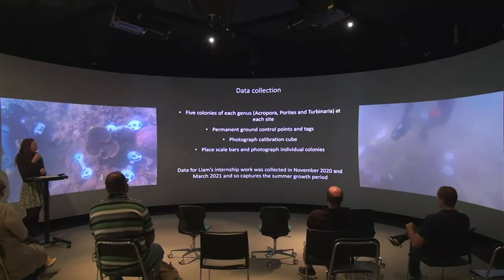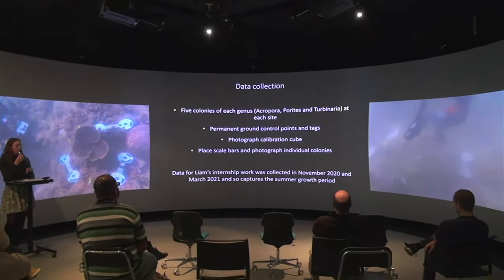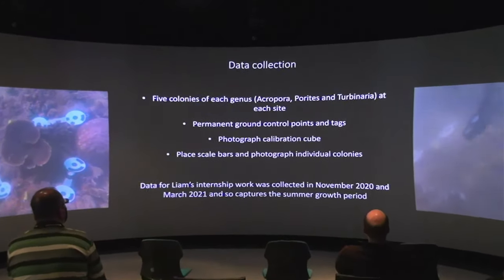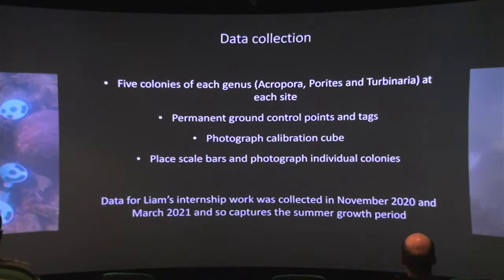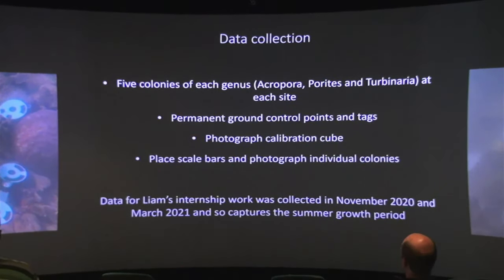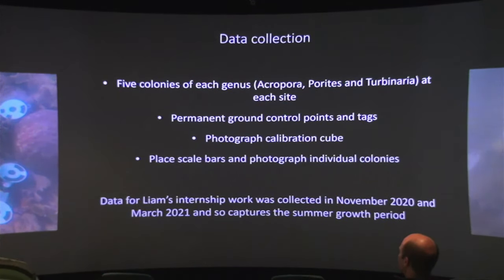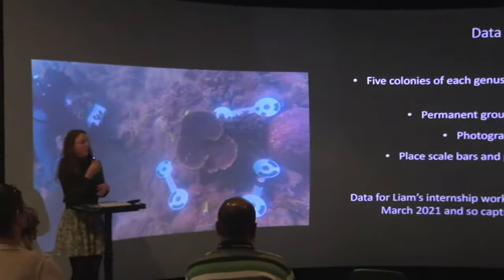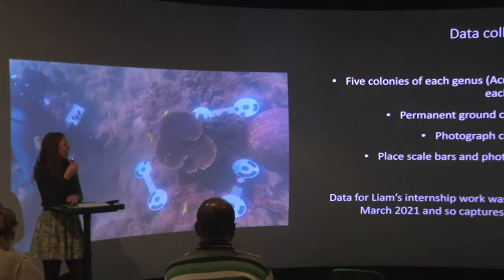Once we've found our five colonies of each genus, we tag them with cattle tags and then also a permanent control point — in this case, anchor screws, like a heavy-duty bolt screwed into the reef, so that we can be confident that when we come back next year they'll still be around and we can find our corals. We also take a GPS location in the field and make a rough mud map. We have been back three times now and we've been able to find them all — some have been damaged, but we've had pretty good success.